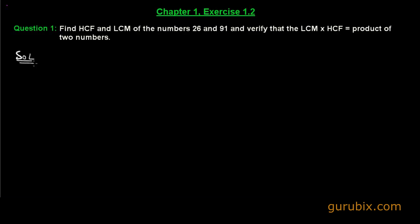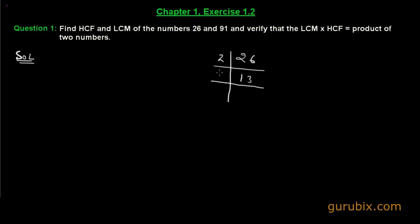This is very easy. First of all, we shall find the product of their primes. Suppose we have 26 and we shall factorize it into its primes. Dividing 26 by 2 we get 13, and 13 is a prime number, so 13 cannot be factorized anymore. So we can write 26 as 2 × 13.